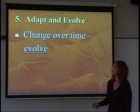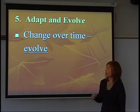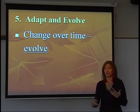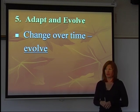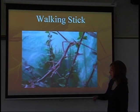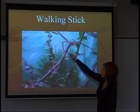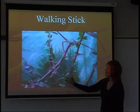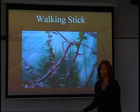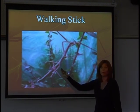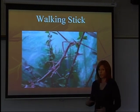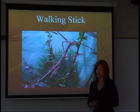The fifth and last characteristic of living things is that all living things are able to adapt and evolve. This is a change over a long period of time where a species will slowly adapt and change in order to survive. A great example is the walking stick insect shown here — it should be difficult to see, because that's the point. Over time it has evolved to blend in with sticks in the background, providing camouflage so it won't be eaten. This slow change over time, sometimes taking thousands of years, is what we call evolution.